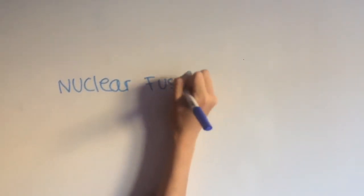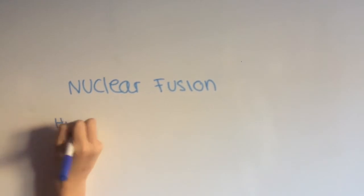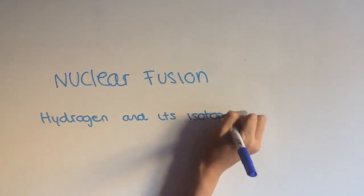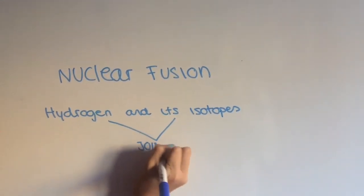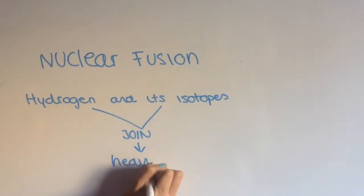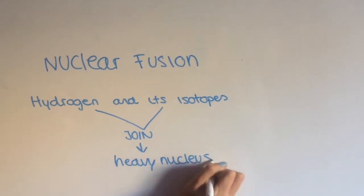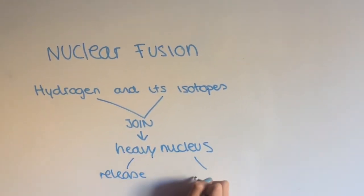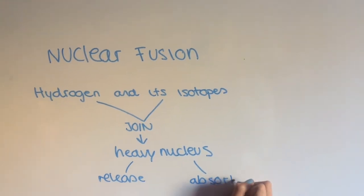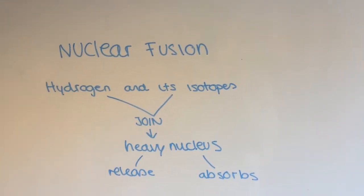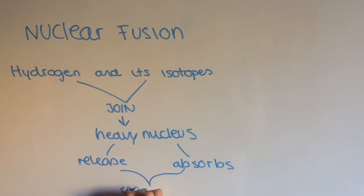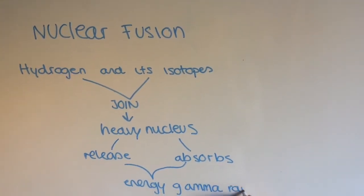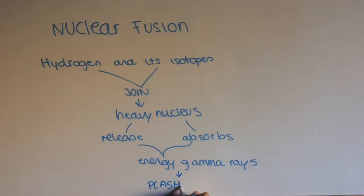Nuclear fusion is a nuclear reaction in which two atomic nuclei, usually hydrogen and its isotopes, join together to form a heavier nucleus. Generally, this union is accompanied by the emission of particles. This nuclear fusion reaction releases or absorbs a large amount of energy in the form of gamma rays and also kinetic energy of the emitted particles. This large amount of energy allows matter to enter the plasma state.